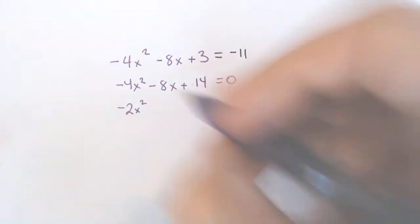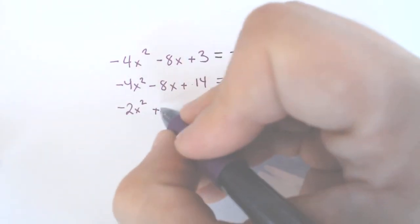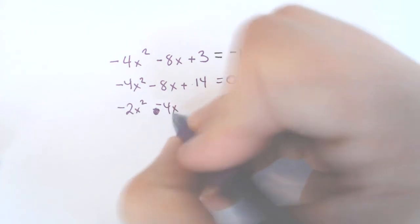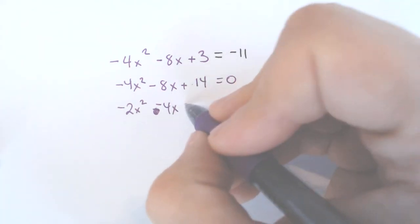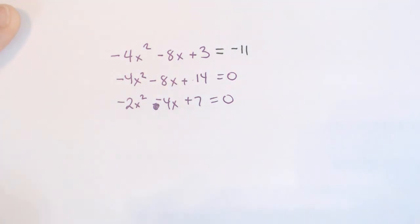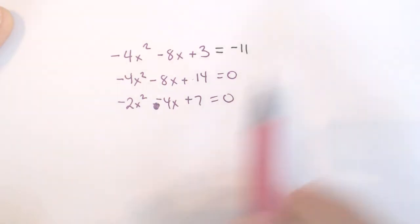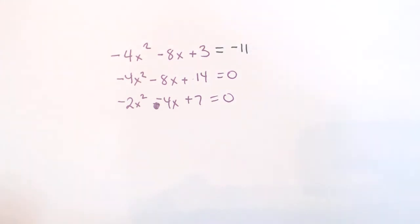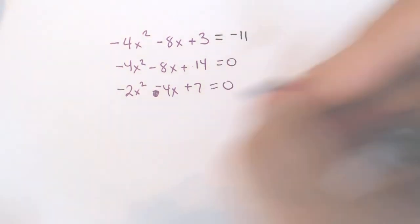It was negative, so it stays negative. 8 divided by 2 is 4. It was negative, so it stays negative. And 14 divided by 2 is 7. So much smaller numbers, much more manageable. If you wanted to divide by negative 1 because you don't like the negative 2x², you're also allowed to do that. That's something I would do a lot because I don't like a negative x², if I can avoid it. But I feel like we need to see it in this case.